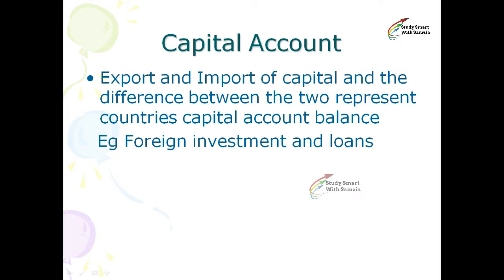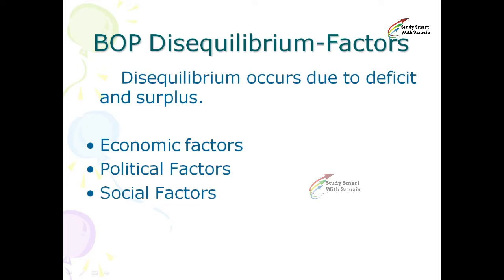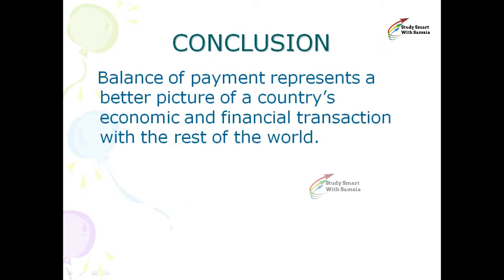Examples of capital account items include foreign investment and loans. BOP disequilibrium occurs due to a deficit or surplus, caused by first, economic factors; second, political factors; and third, social factors. In conclusion, the balance of payment represents a better picture of a country's economic, financial, and social transactions with the rest of the world.